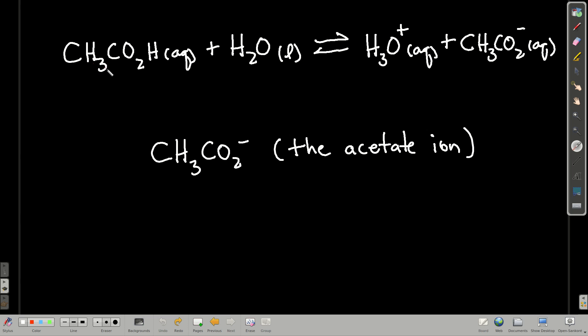So acetic acid's formula is CH3CO2H. You know, there's a few ways that we commonly write acetic acid. It could be CH3COOH, sometimes HC2H3O2. That's acetic acid. And this is an acid, so it donates a proton to water, making the hydronium ion and the acetate ion. The acetate ion differs from acetic acid by the loss of one proton, making it the conjugate base of acetic acid.